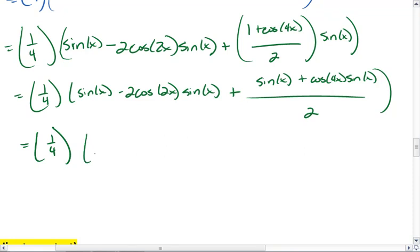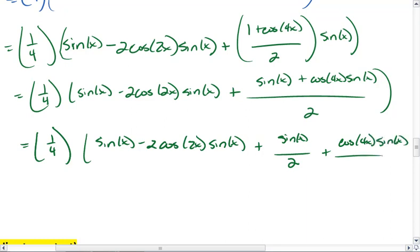We get sine of x minus 2 cosine 2x sine x plus sine of x over 2 plus we're going to split up this fraction cosine 4x sine x all over 2.